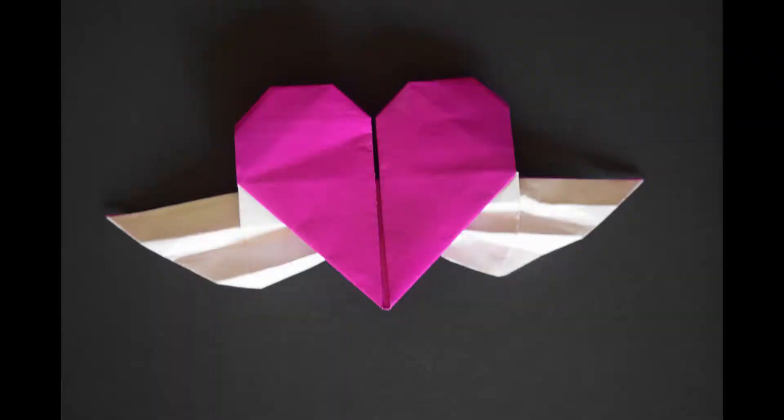On the front side, as you can see, this is the final result we've got and it looks amazing. The heart is in perfect shape. The wings are also perfect. This is the origami heart with wings we've made.